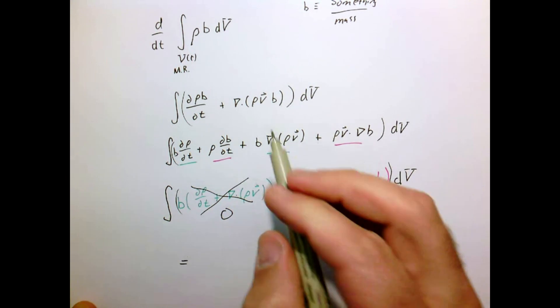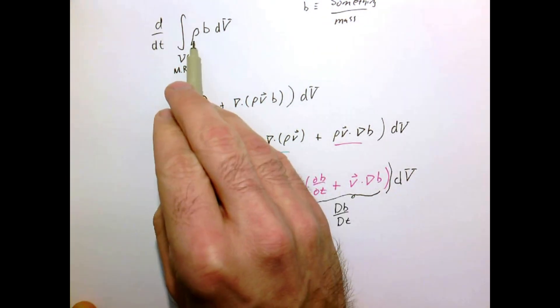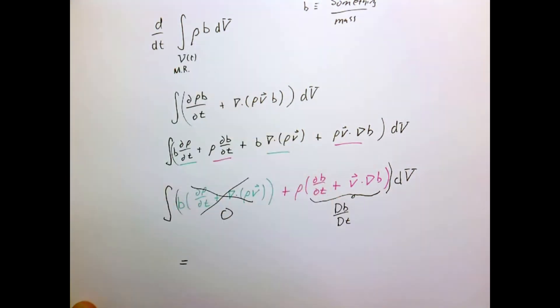So our result then is that the time rate of change of the density times something per unit mass integrated over the volume, if that's a material region, is nothing more than the following. We'll use this result extensively in our later conservation laws.